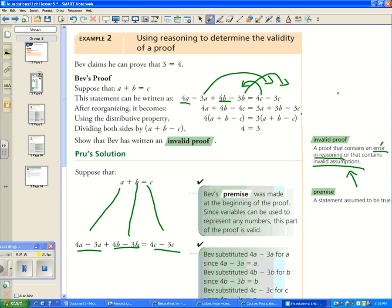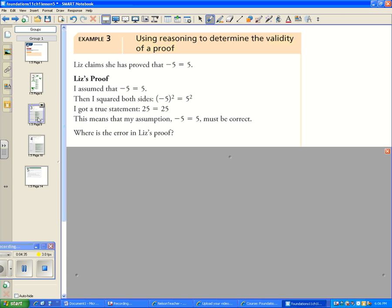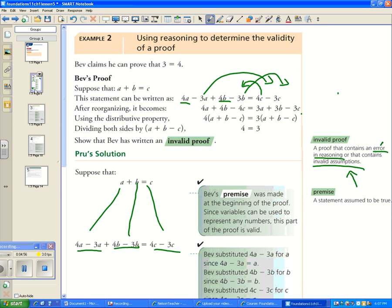Next up, Liz claims that she has proved that negative five is equal to five. So she assumed that negative five was equal to five. She squared both sides, she got 25 equals 25. Well that's true, therefore my assumption has to be true. What's the error? I'm going to remind you again: a proof that contains an error in reasoning or invalid assumptions.